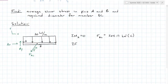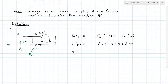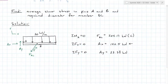Summing forces in the x direction gives A_x equal to 122.5 kilonewtons; the negative answer means it actually acts to the left. Summing forces in the y direction gives A_y equal to 23.33 kilonewtons, acting upward.